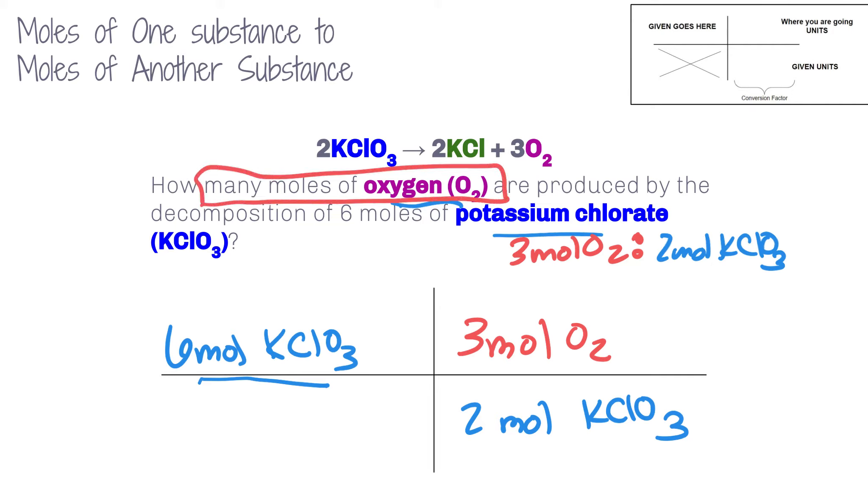So because we started with our moles KClO3, we're going to put 2 moles KClO3 on the bottom and 3 moles O2 on the top because it says how many moles of O2. That's the question we need to answer. So this is the unit substance we want in our final answer. These will end up canceling. So we have 6 times 3, which is 18, then divided by 2 is 9 mole O2 as our answer.